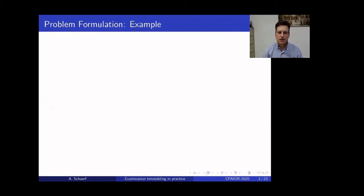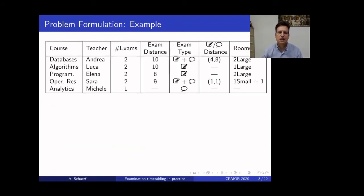So, this is a quite specific problem that applies to Italian universities that have some peculiar instructions with respect to the ones known in the timetabling literature. So, I will start introducing it with an example. One of the peculiarities is that exams are given more than once in one examination session. So, for example, here a database is given twice, and you have a certain distance between the two times that the exam is given. For example, here this exam is given only once, and so there is no distance.